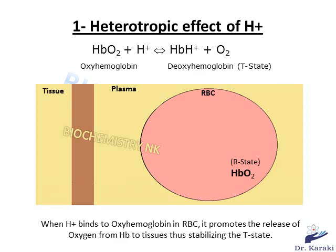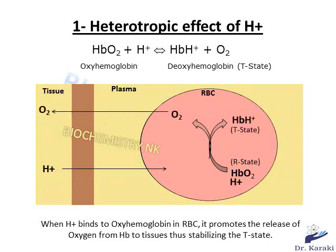So what happens in an acidic environment, such as in actively metabolizing tissues releasing protons? These released protons bind to oxyhemoglobin in red blood cells, promoting the release of oxygen from hemoglobin to the tissues and stabilizing the T state. When protons bind to hemoglobin, it protonates the imidazole group of histidine, which participates in a salt bridge with a negatively charged aspartate. The formation of this ionic bond holds the structure of hemoglobin together, stabilizing the T state.